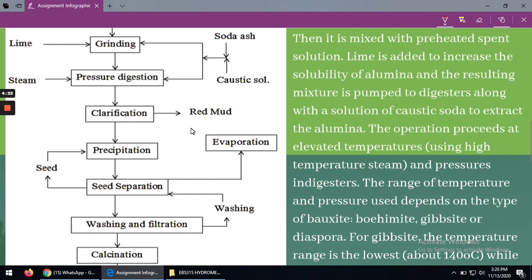At the start, the bauxite ore is dried, crushed, and ground into powder. Then it is mixed with preheated spent solution. Lime is added to increase the solubility of alumina and the resulting mixture is pumped into the pressure digesters along with a solution of soda ash and caustic solution.